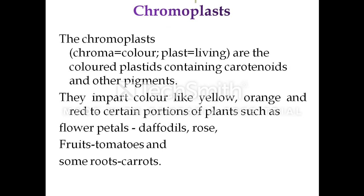Another type of plastid is chromoplasts — 'chromo' refers to color, 'plast' means living. These are colored plastids containing carotenoids and other pigments. They are non-green in color and impart colors like yellow, orange, and red to certain parts of plants such as flower petals in daffodils and roses, fruits like tomatoes, and some roots like carrots.